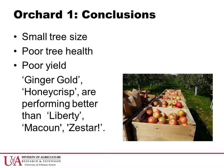Overall, Orchard 1 has had some problems during this study. We've seen relatively small tree size, smaller than we would like considering the age and planting system in the orchard. We've seen some poor tree health in some situations, and poor fruit yield. Given that, Ginger Gold and Honeycrisp are performing better than Liberty, McCowan, and Zestar in terms of tree growth and fruit yield, and Ginger Gold's performance has been more consistent than Honeycrisp across the three years.